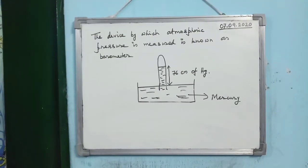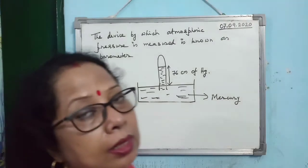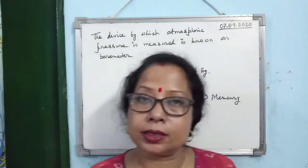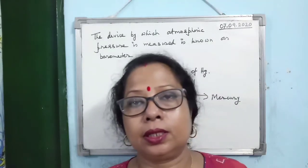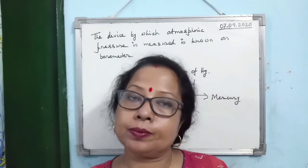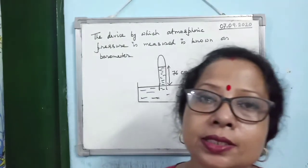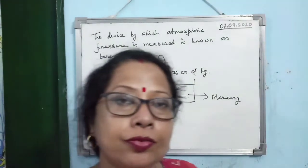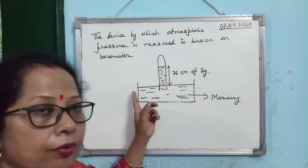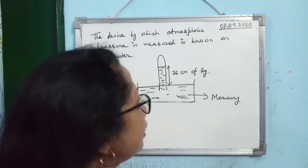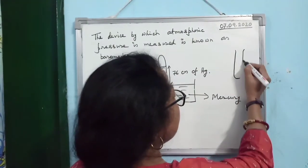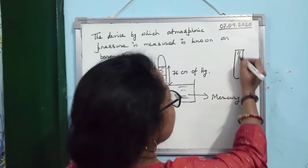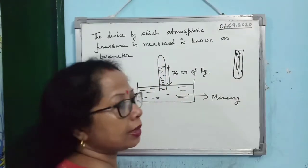The next concept is how to measure atmospheric pressure. Atmospheric pressure is measured by an instrument known as a barometer. For a simple barometer, you fill a container with mercury, then completely fill a test tube with mercury.